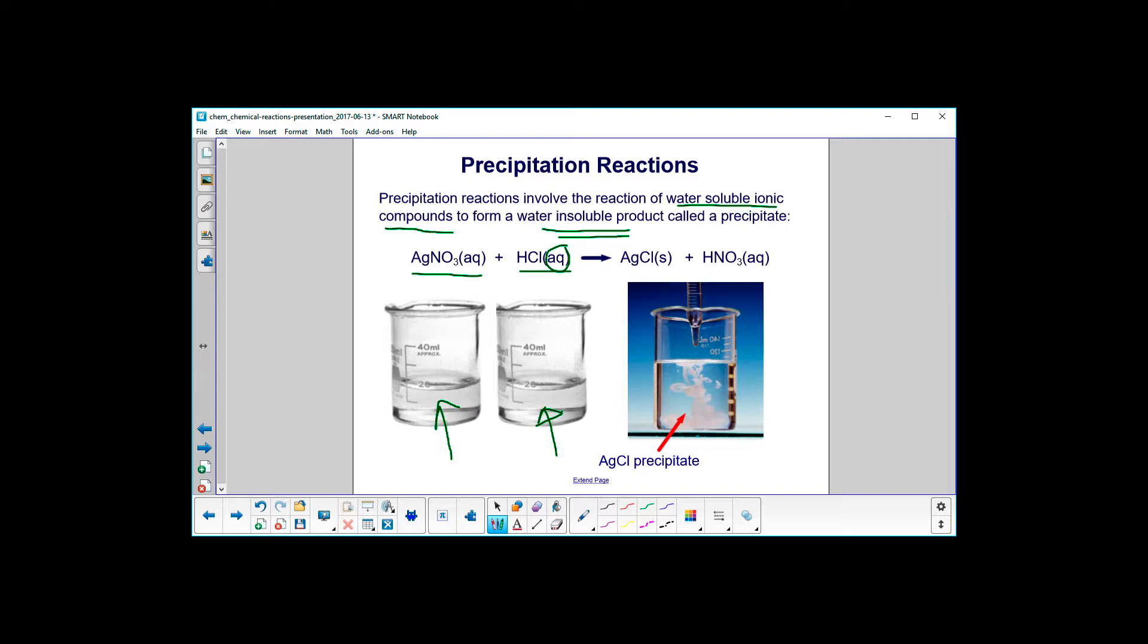When you mix them together, what happens is you see this white cloud here. That's a solid. That is silver chloride coming out of solution, and it's a solid. We call that the silver chloride precipitate.